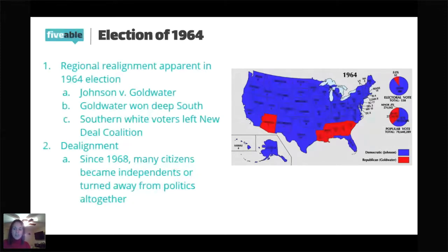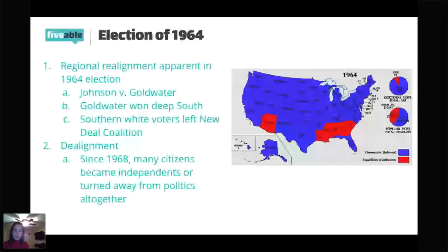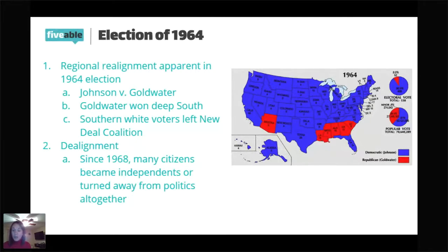Let's go over some practice questions. Question one: Which of the following is most likely to cause a political party to change its position on a specific issue? A — the challenger to a popular incumbent demands the party change its position; B — polling numbers suggest the public is undecided about the issue; C — a large group of the party's base supporters advocates for the change. Everyone's going with C, and yes, C is the correct answer. A large group of the party's base supporters advocating for change could lead the political party to change its position.